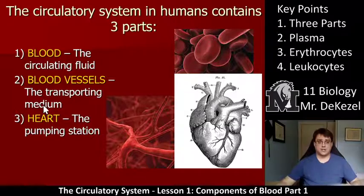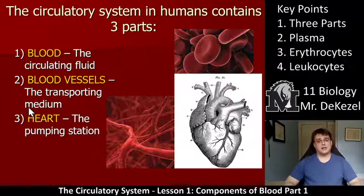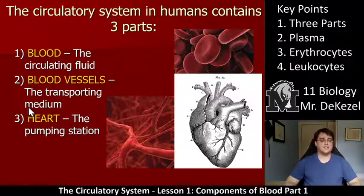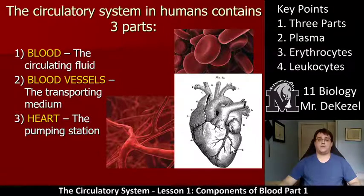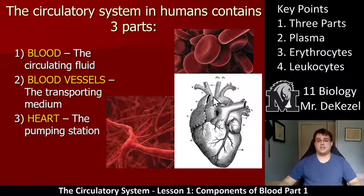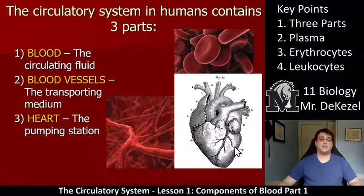Here are the three parts officially. Number one is the blood, and we're going to talk about the blood for the first four lessons approximately. Then, second, we're going to talk about the blood vessels. And third is the heart, which we will cover in detail. We're going to talk about all the different pieces: the aorta, the pulmonary veins and arteries, the atriums and the ventricles.